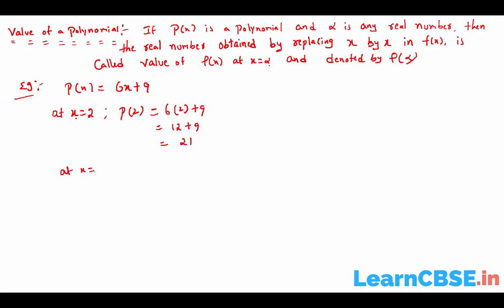Same thing — if X equals 5, in the place of X we substitute 5, that means P of 5 equals 6 into 5 plus 9, which is 30 plus 9 equals 44. So 21 is the value of the polynomial at X equal to 2, and 44 is the value of the polynomial at X equals to 5.